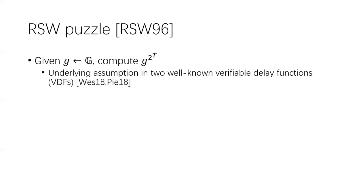The most well-known time lock puzzle is the RSW puzzle, again proposed by Rivest, Shamir, and Wagner in their 1996 paper. In a fixed group, given a random group element G, the task is to compute G to the power of 2^T. This is used in almost every timed cryptographic scheme up to now, and in particular it is the underlying assumption of two well-known verifiable delay functions which have wide applications in many blockchain systems.